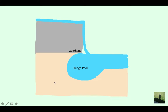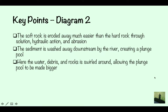Here's your second diagram — always remember to annotate it; I've got the annotations here, and you might want to add more to be sure. The key point for this diagram is that the soft rock is eroded away much more easily than the hard rock, through solution, hydraulic action, and abrasion. The sediment is washed away downstream by the river, creating a plunge pool.